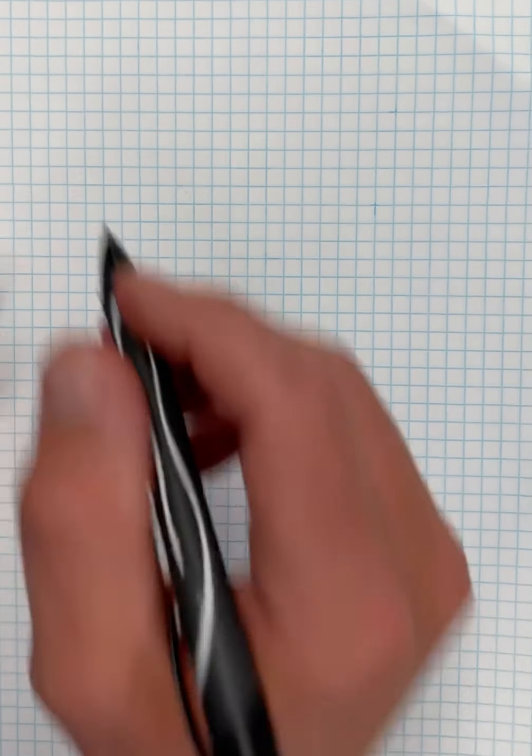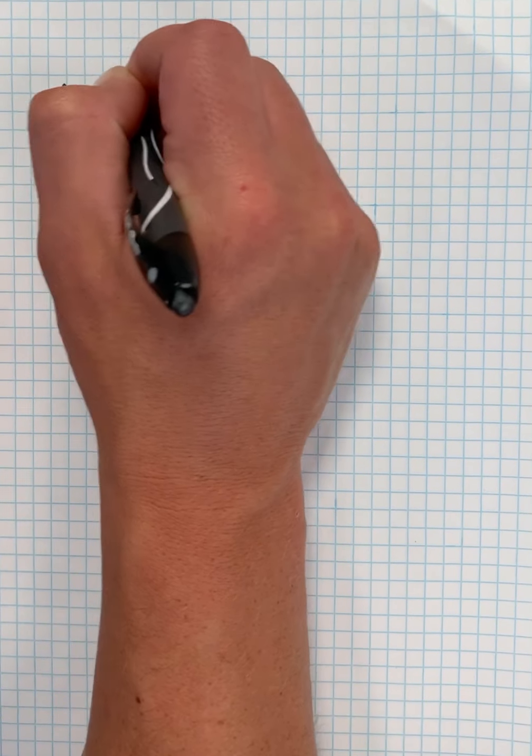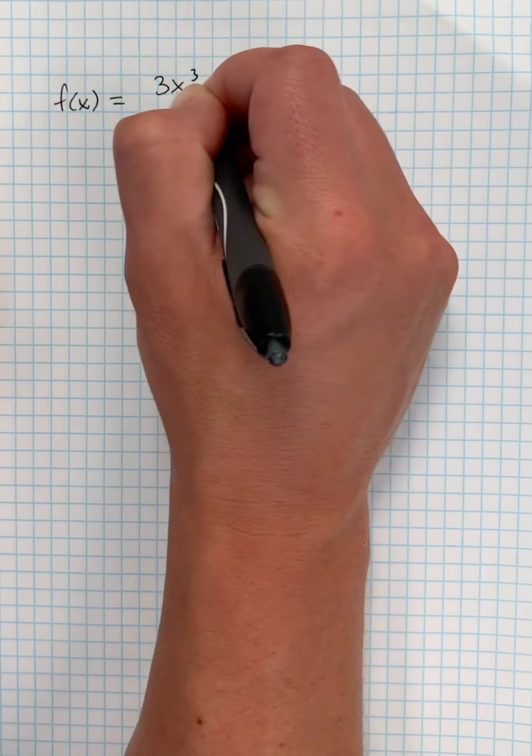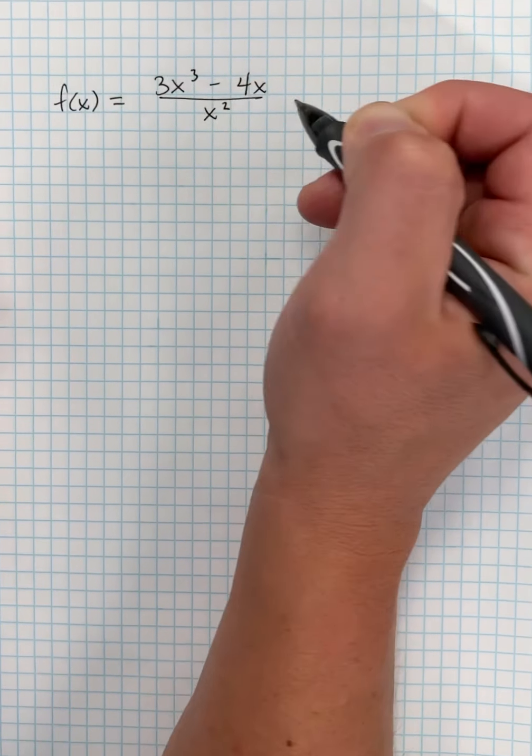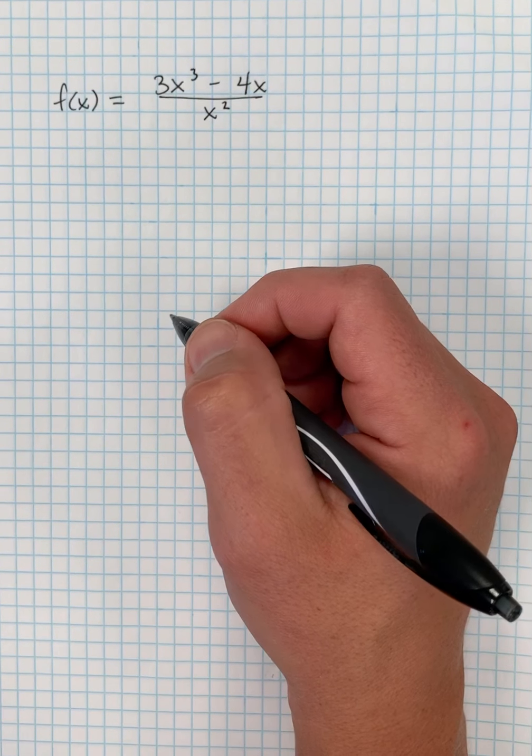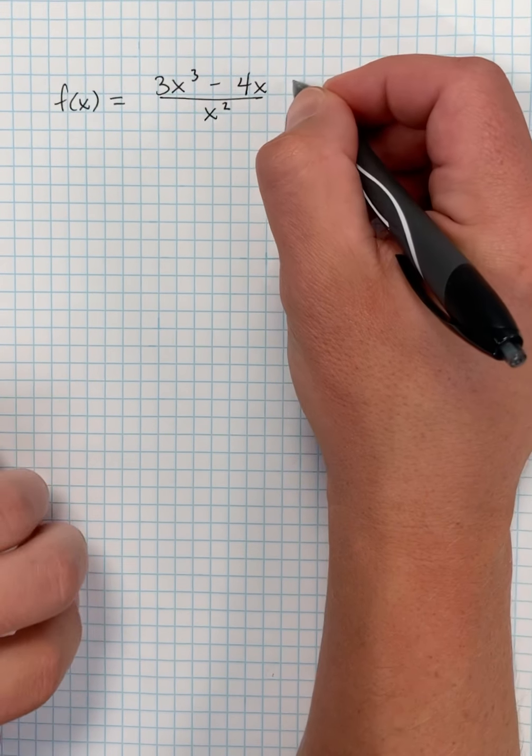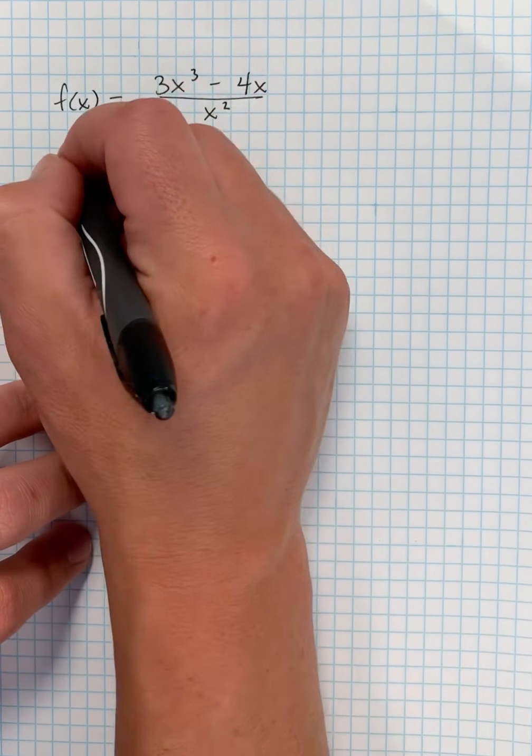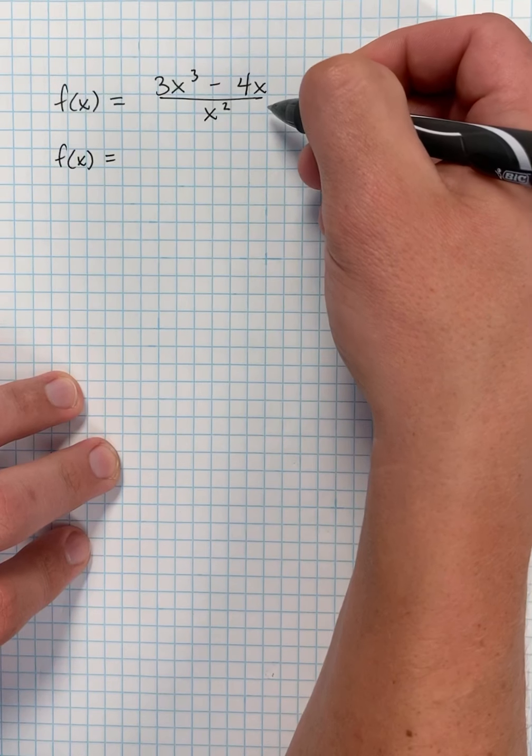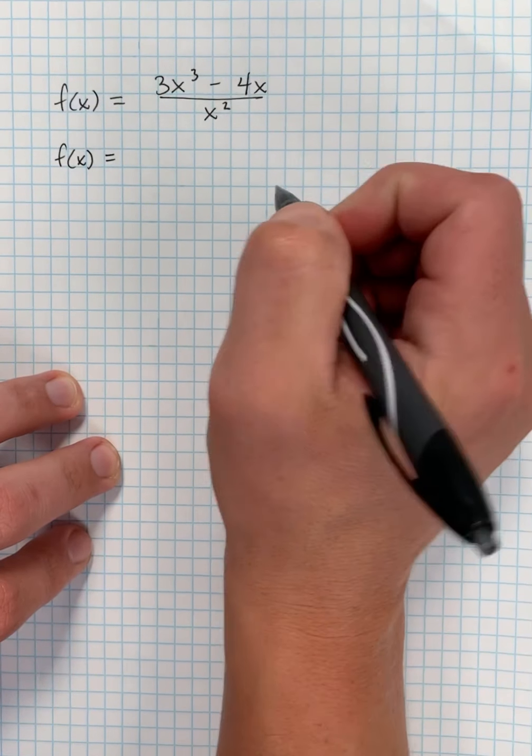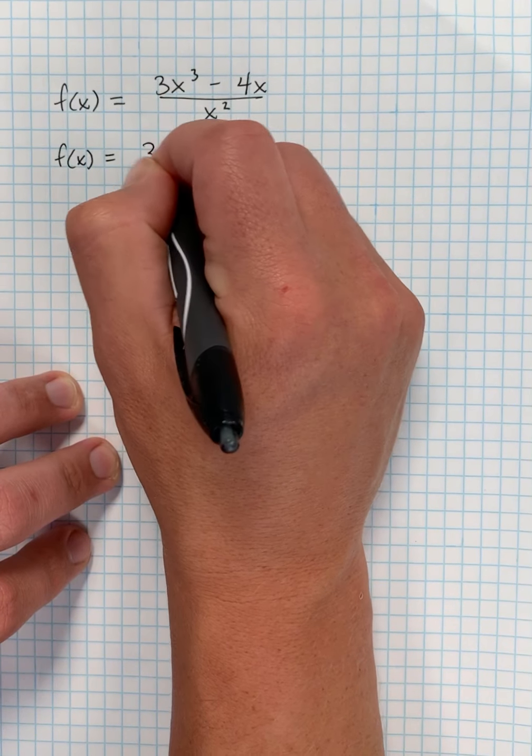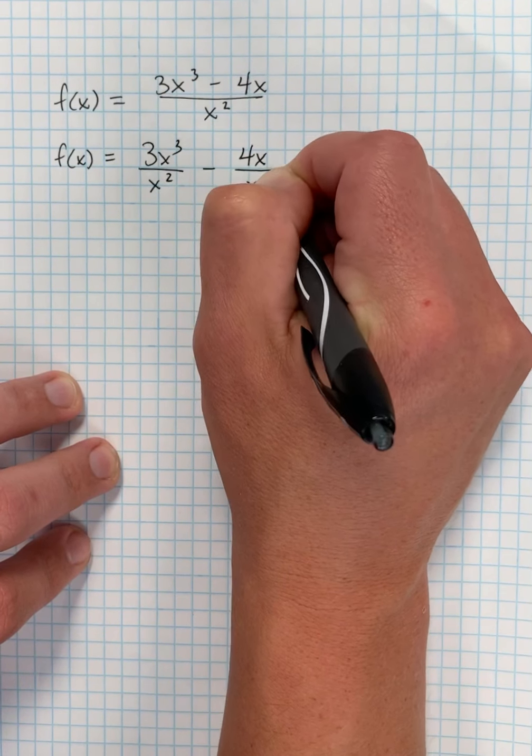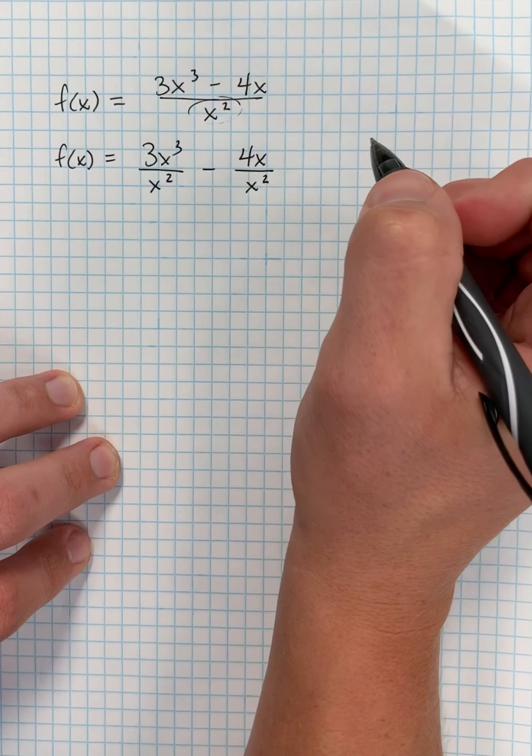is if you had a function f(x) equals, I don't know, 3x cubed minus 4x all over x squared. A lot of people, when they first see this, for some reason they want to bring this x squared up and make this some sort of like x to the negative second. I'm not a big fan of rewriting it that way. Instead, I'm going to rewrite this. Instead of just jumping in and using the quotient rule automatically, I'm going to divide this into two fractions. I'm going to make this 3x cubed over x squared minus 4x over x squared.